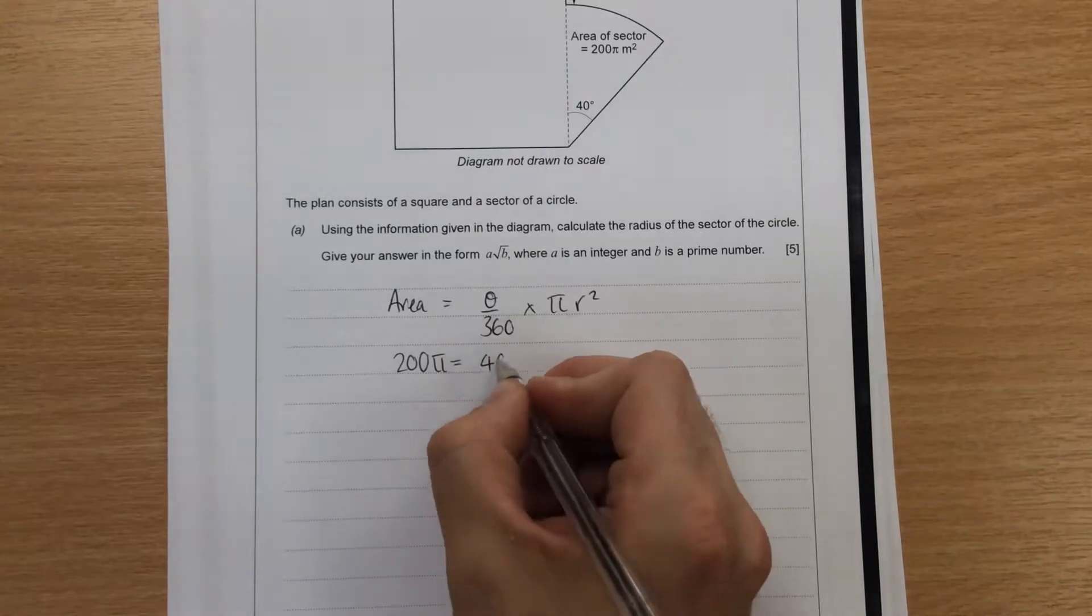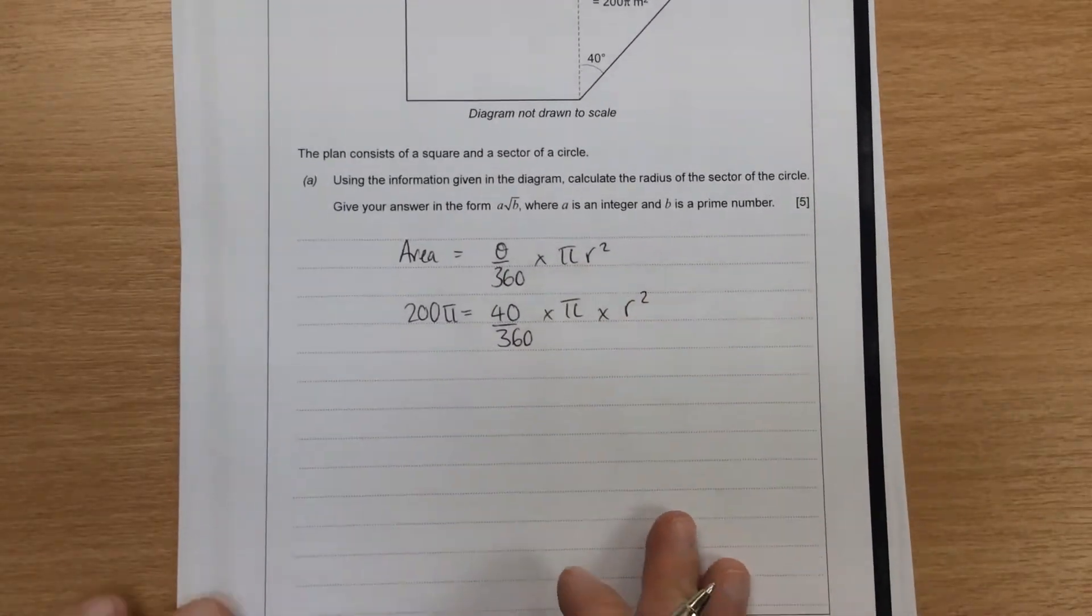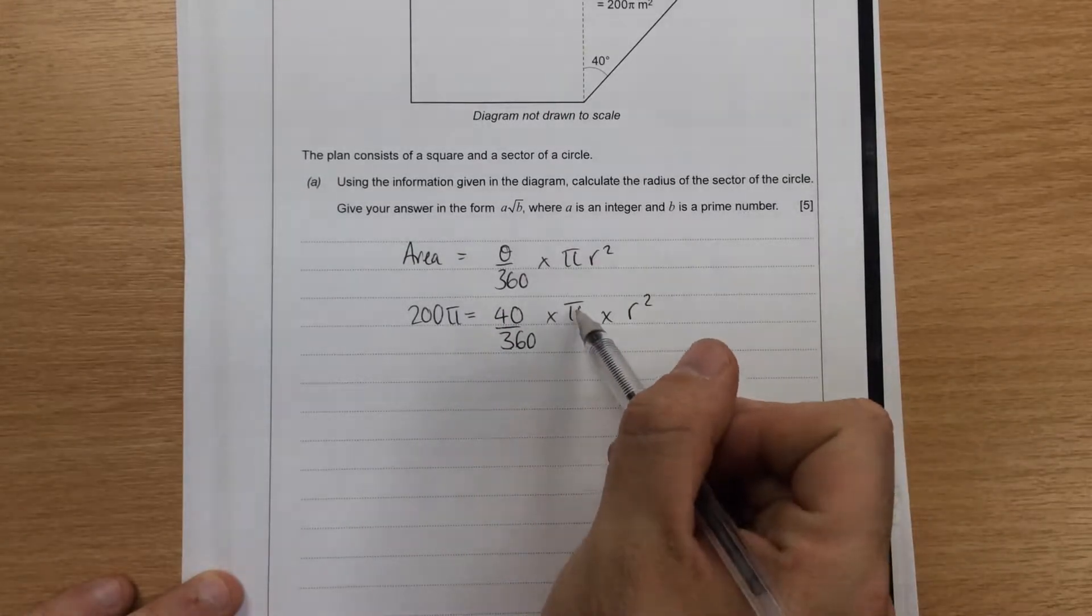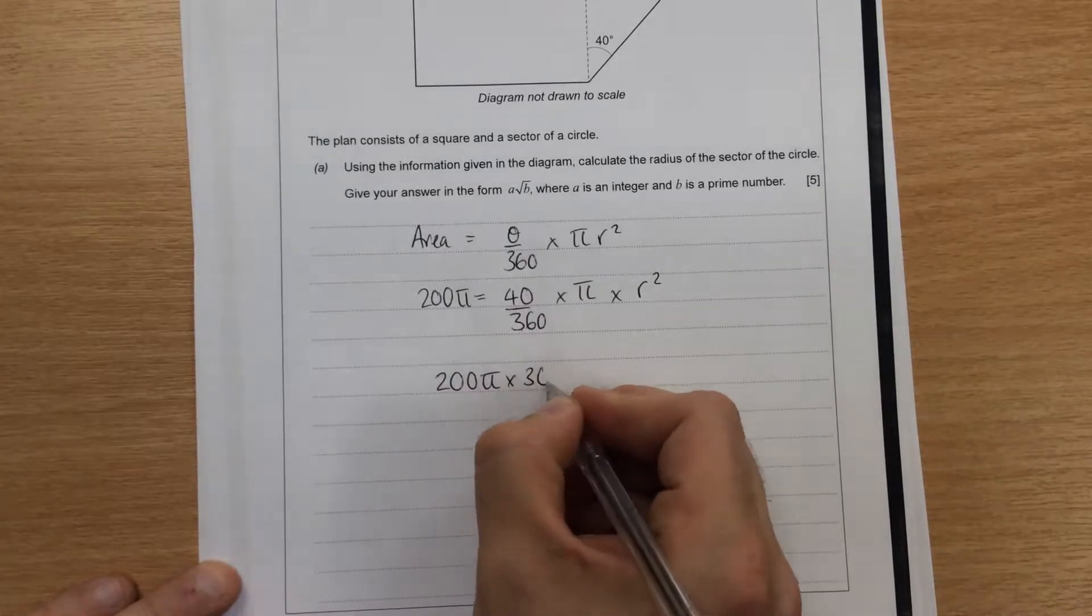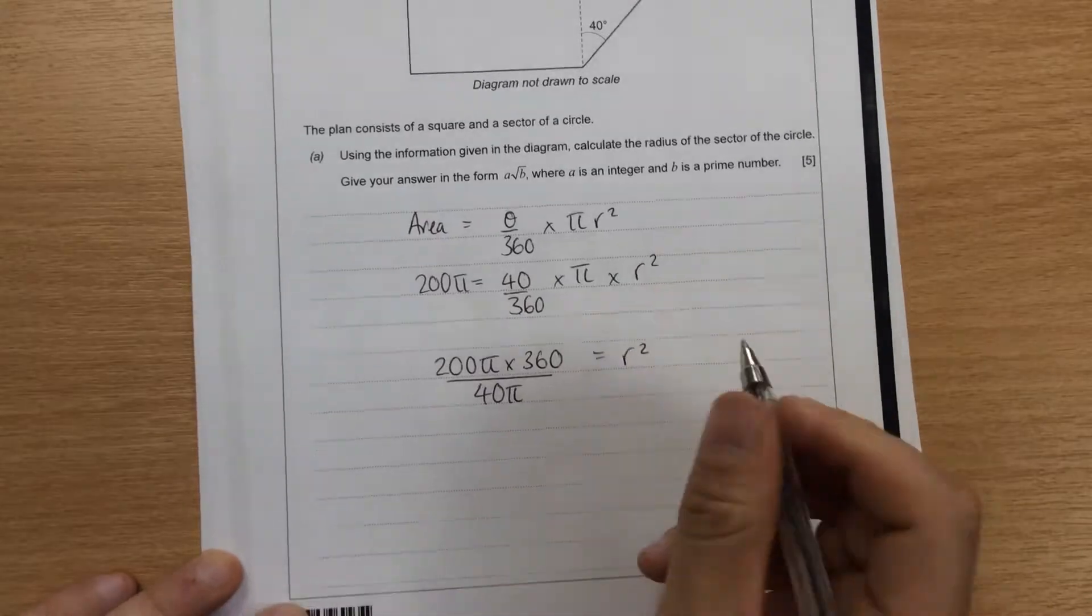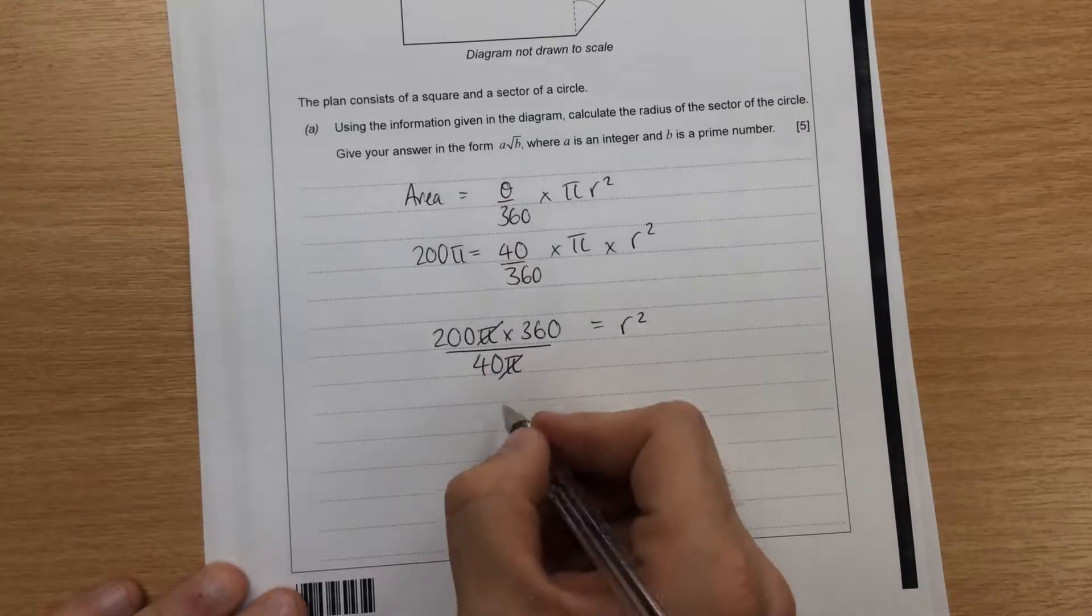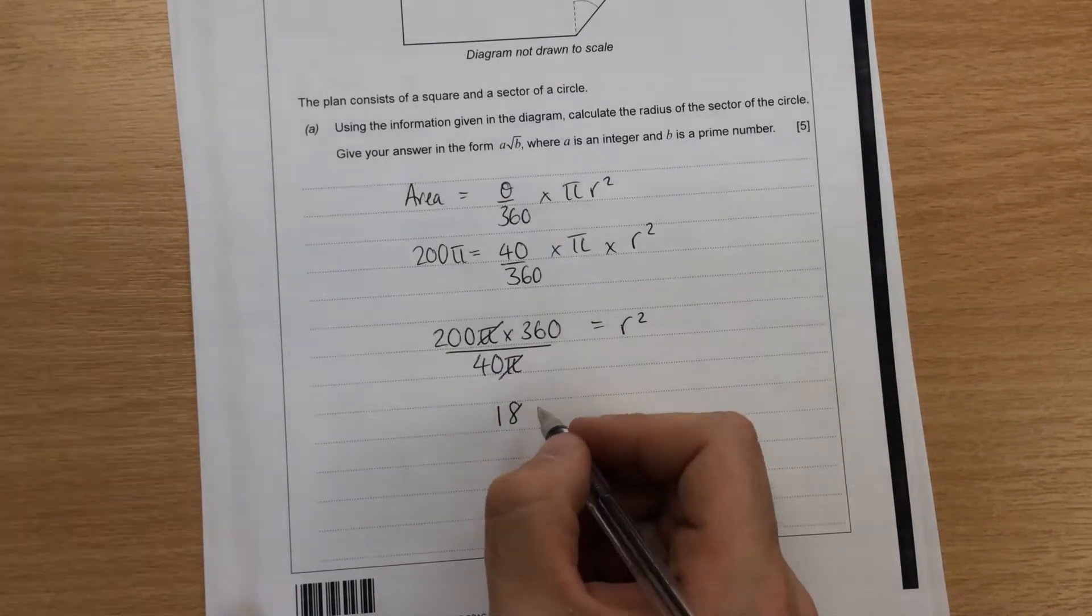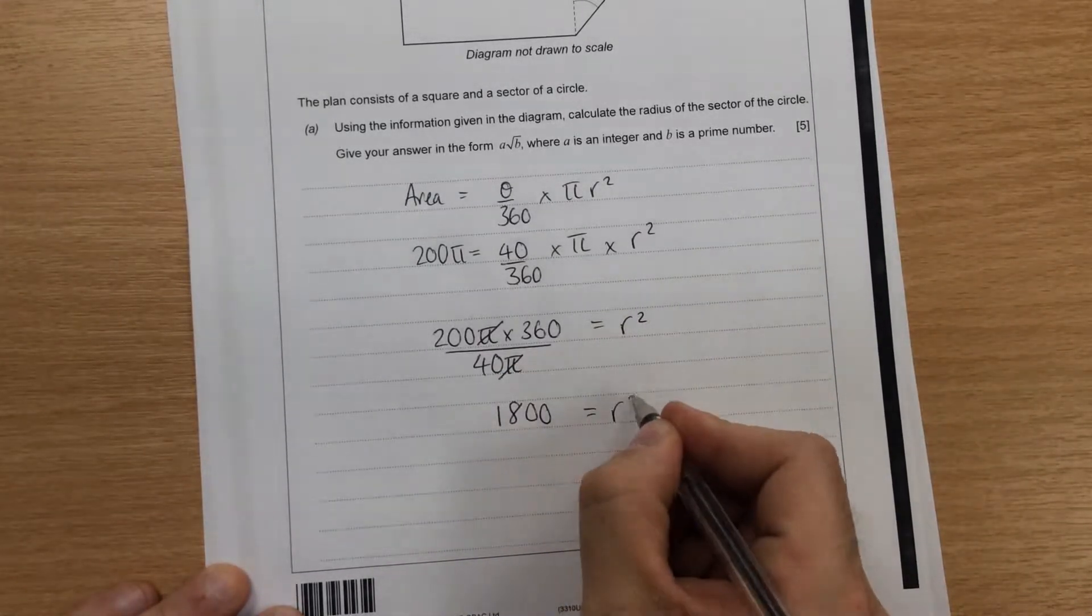Theta we know is 40 divided by 360 times by pi times by what we're trying to find out, which is r squared. Take the 360 up and times, take the 40 down divide and take the pi over to divide as well. So we end up with 200 pi times 360 divided by 40 pi is equal to r squared. The pi's cancel. 200 divided by 40 is 5, and then times 5 by 360 is 1,800. And we've obviously got rid of the pi because they cancel. So it is 1,800 equals r squared.